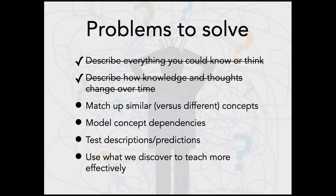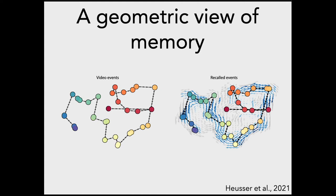Each coordinate in text embedding space describes some concept that you could learn, know, or think about. If we choose the right training corpus — or even just a really enormous corpus covering as many domains of human thought as possible — the scope of these embedding spaces starts to approximate everything we could learn or think. That solves the first problem to some approximation. The geometries of these spaces tell us how different concepts relate, and we can trace out how thoughts or conceptual content change over time.